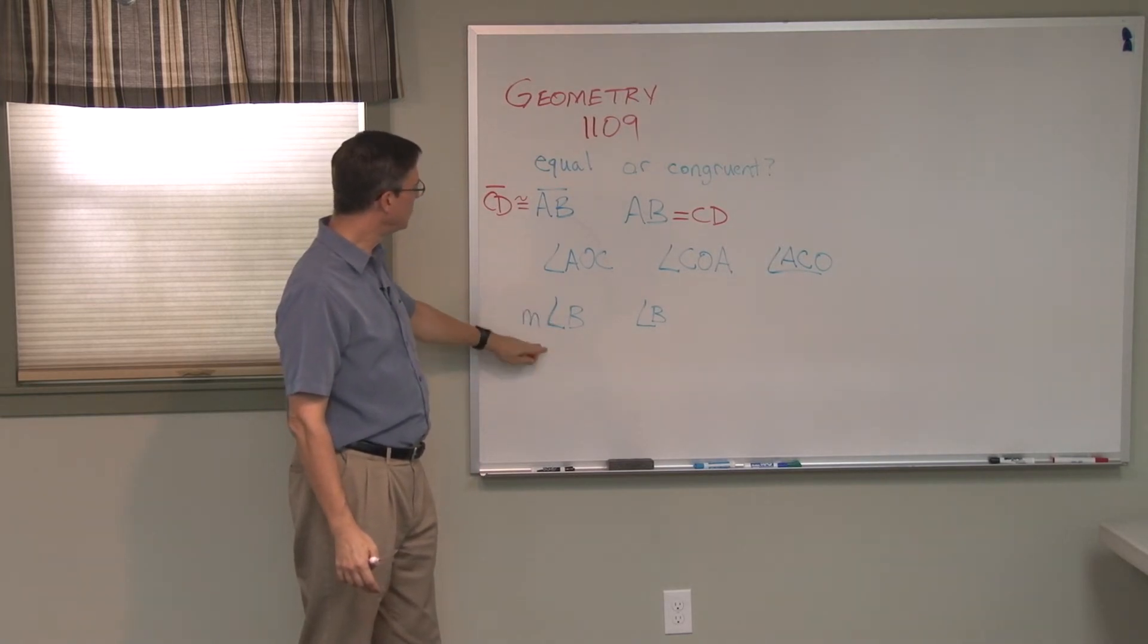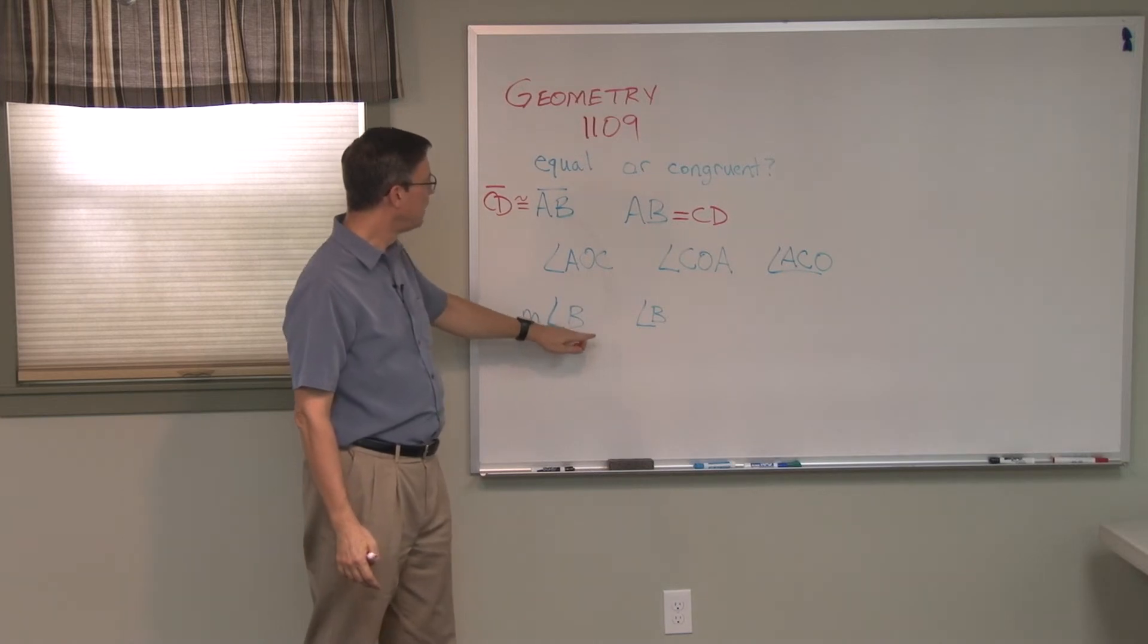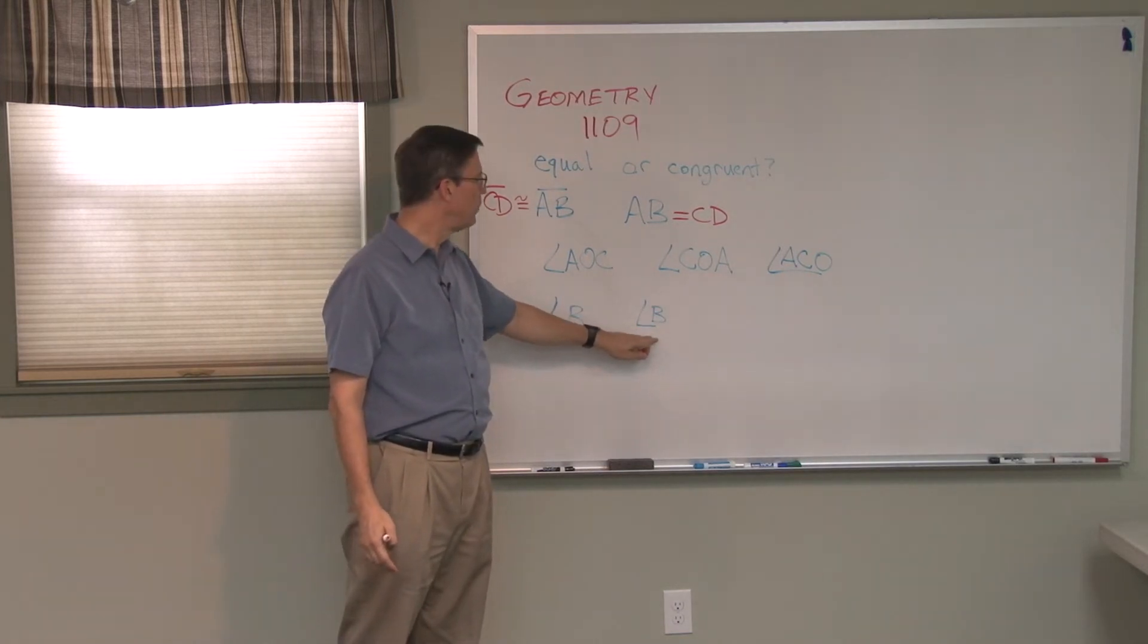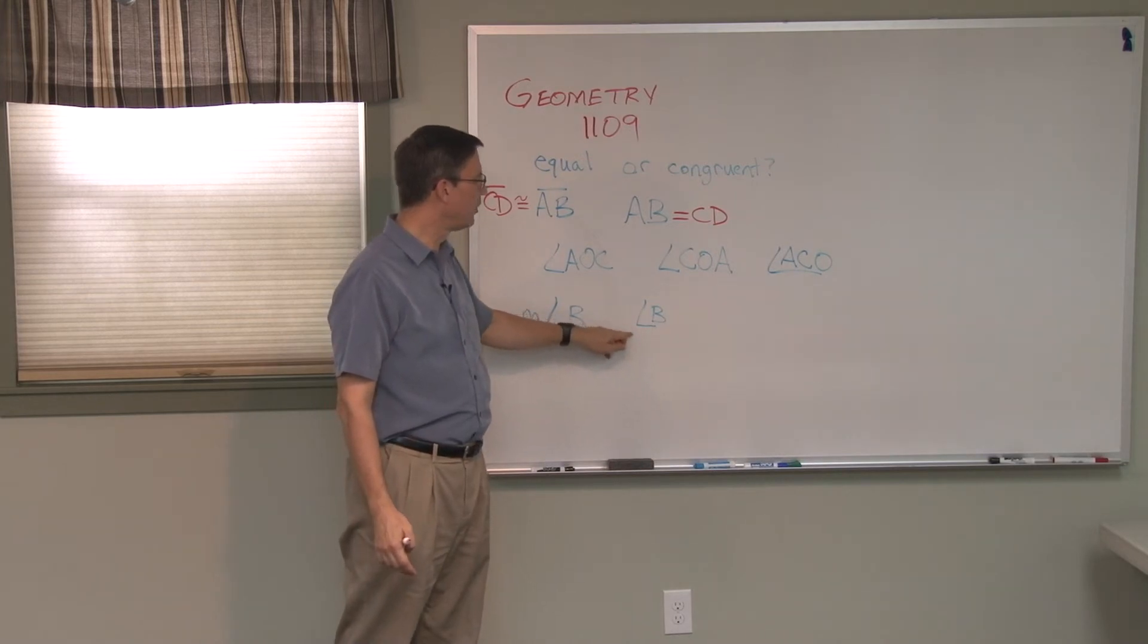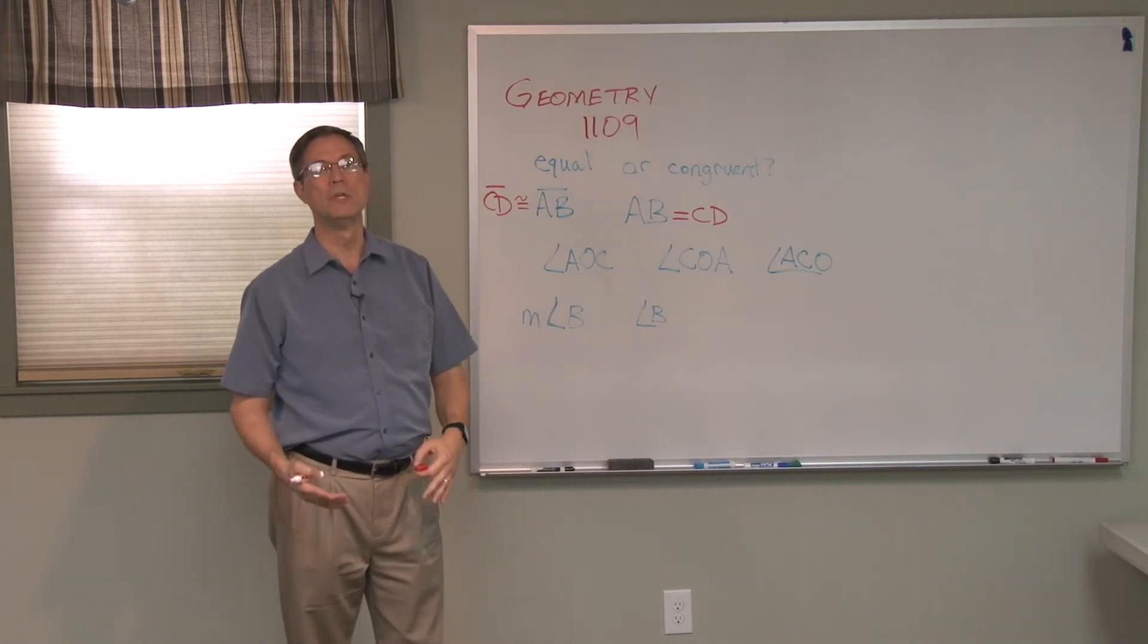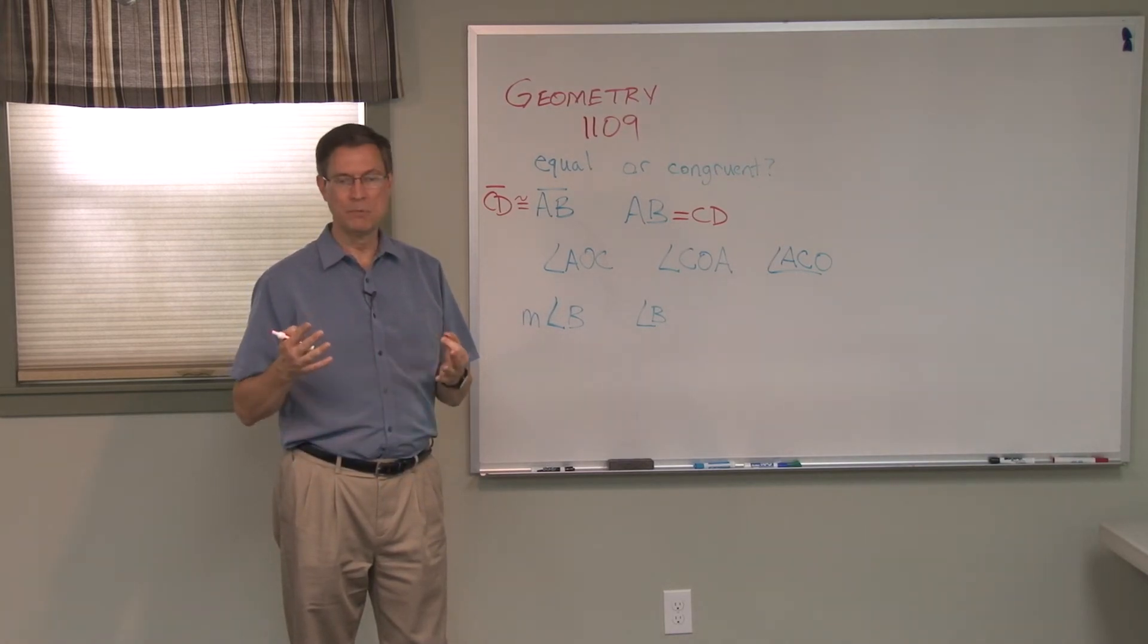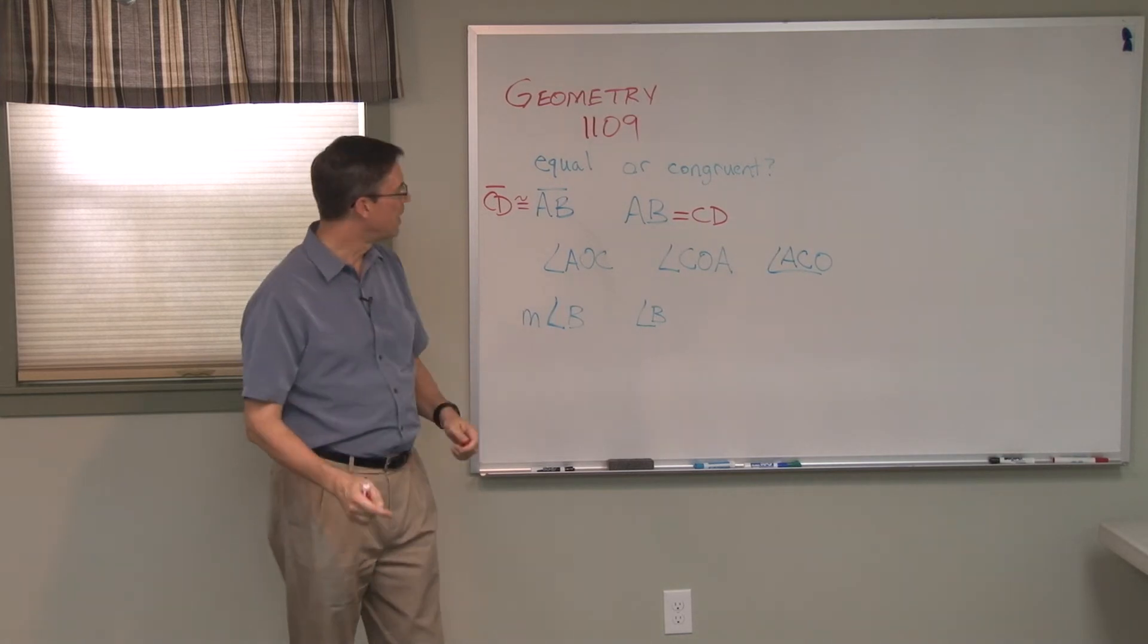Let's talk about angles here. We might talk about angle B two different ways. Angle B without an m in front of it is talking about the shape, identifying where it is in the diagram, and maybe referring to the actual lines that make it up.